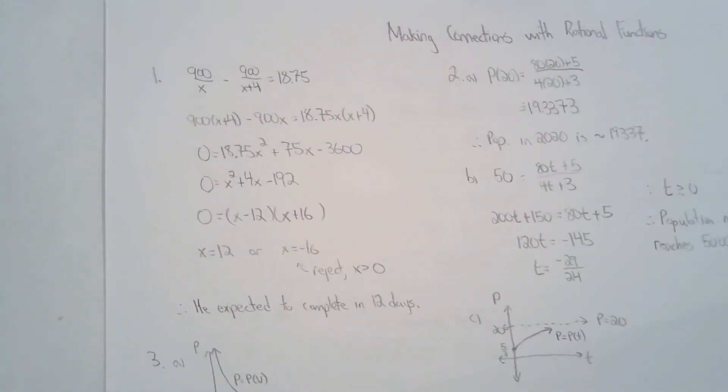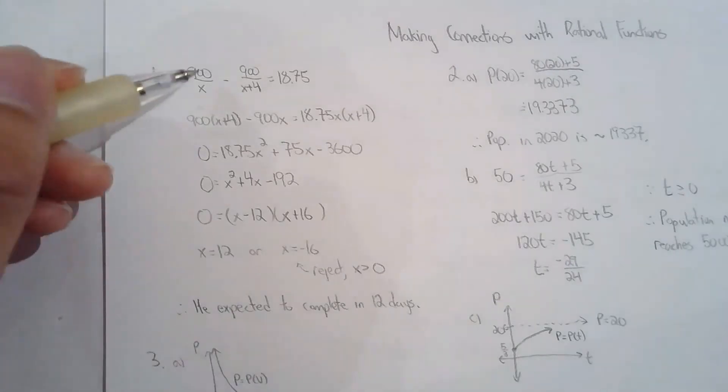For the first question, Stuart has a job that takes him four days longer than expected, which means the pay per day drops $18.75. So this is the original pay per day and this is the actual pay per day. This is going to be less because he took more time to do it.